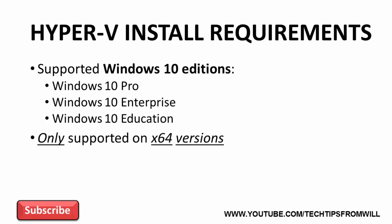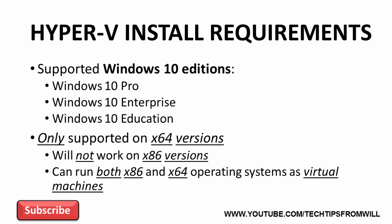Furthermore, Hyper-V is only supported on 64-bit versions of Windows 10. You can't install Hyper-V onto any 32-bit versions of Windows 10. Even if you are running a supported edition of Windows 10, if that edition is using a 32-bit architecture, Hyper-V cannot be installed. Although Hyper-V itself can only be installed onto 64-bit versions of Windows 10, it is possible to run both 32-bit and 64-bit operating systems as virtual machines.